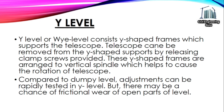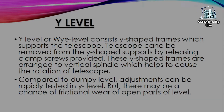The Y-level consists of Y-shaped frames which support the telescope. The telescope can be removed from the Y-shaped supports by releasing clamp screws. These Y-shaped frames are arranged on a vertical spindle which allows rotation of the telescope. Compared to the dumpy level, adjustments can be rapidly tested in the Y-level, but there may be a chance of friction due to the open parts of the level.